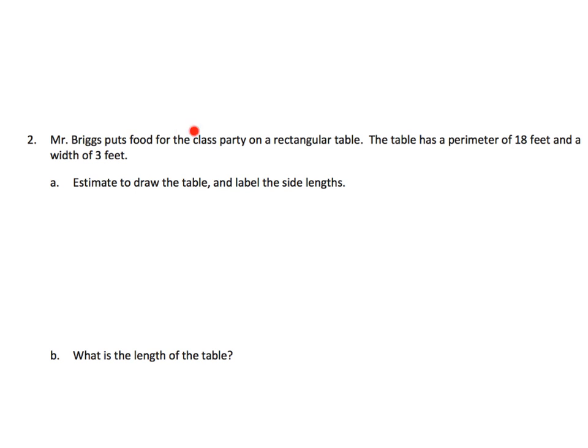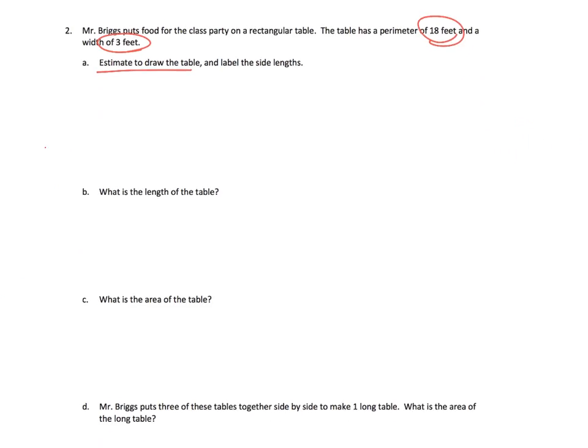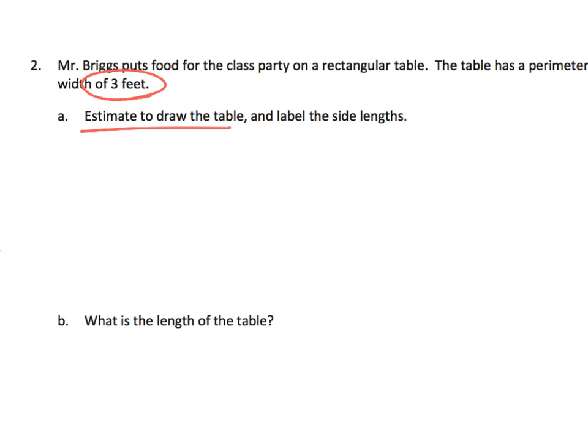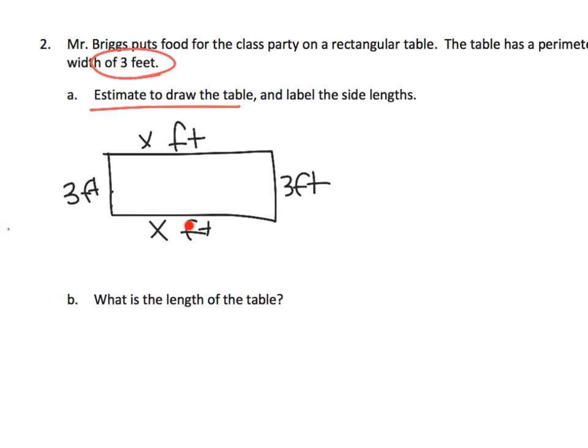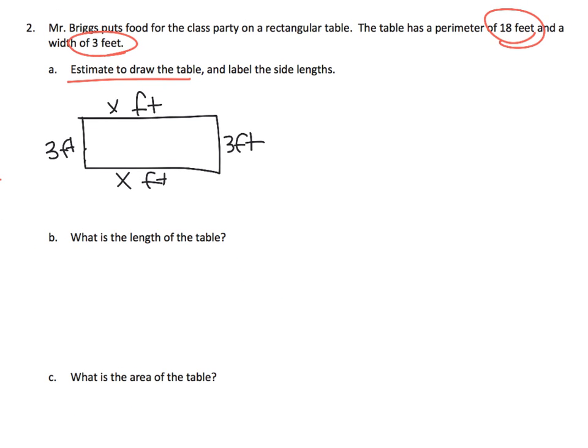Mr. Briggs puts food for the class on a rectangular table. The table has a perimeter of 18 and a width of 3. So we're supposed to draw that table. This length here is three feet, which means this length here is three feet. We don't know what this length is, but we know if we add this whole thing all the way around, we're going to get 18. Another way to think of that is we could say x plus x plus 3 plus 3 equals 18.